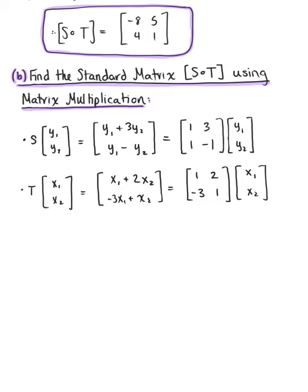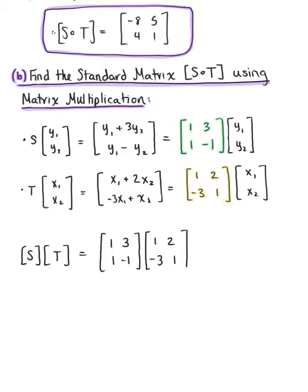Now we are ready to perform the matrix multiplication. The standard matrix of S∘T equals the standard matrix of S multiplied by the standard matrix of T: [1, 3; 1, −1] times [1, 2; −3, 1].